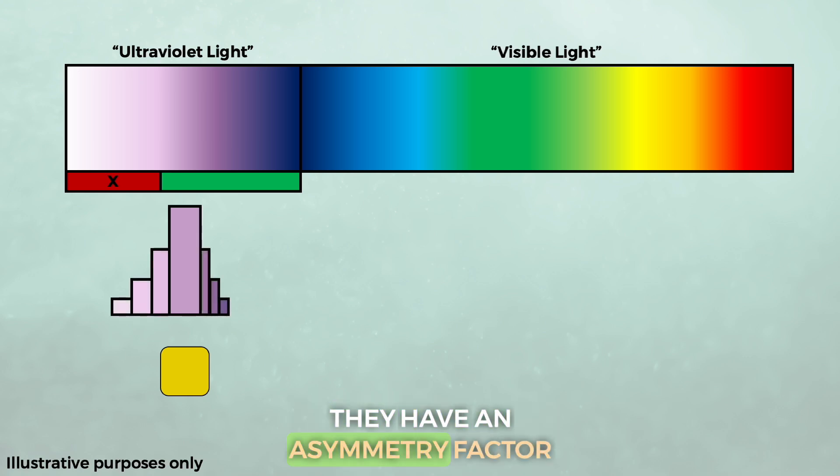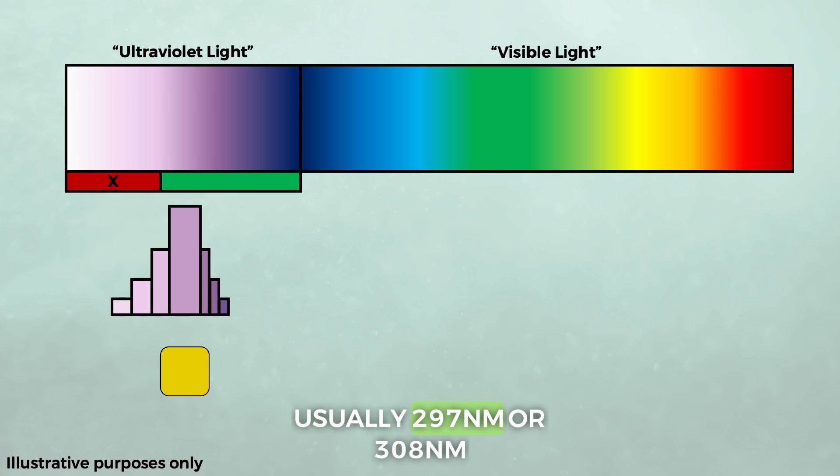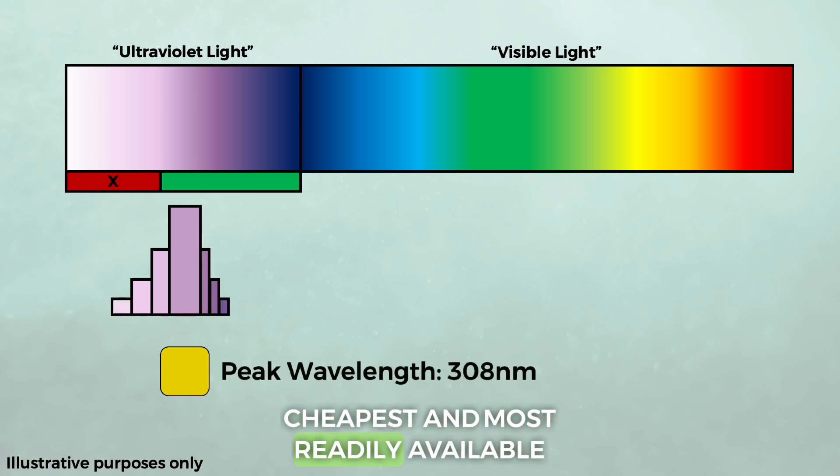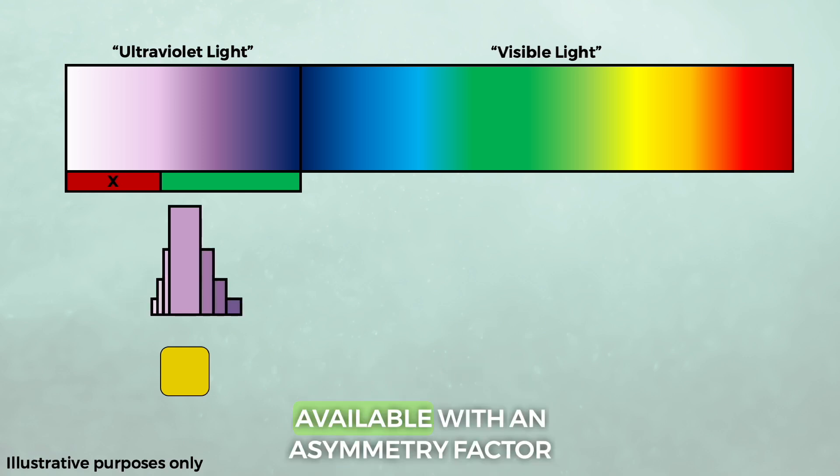Well, for most UVB diodes, they have an asymmetry factor that skews their output towards these more dangerous UV wavelengths. And the peak wavelengths are usually 297 nanometers or 308 nanometers. This is because they're the cheapest and most readily available. There are more refined diodes available with an asymmetry factor that makes their output more favorable, with more output in these good, safe areas of UV. But of course, they are much, much more expensive.